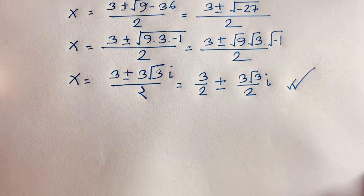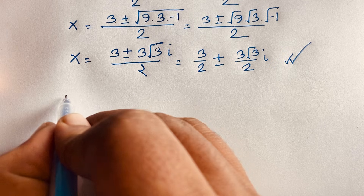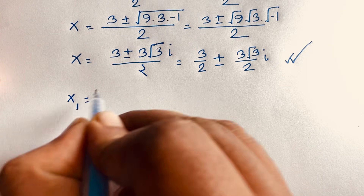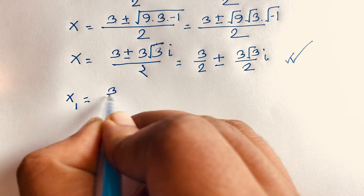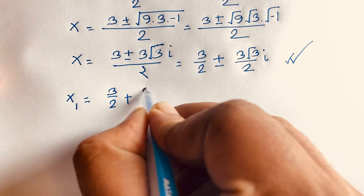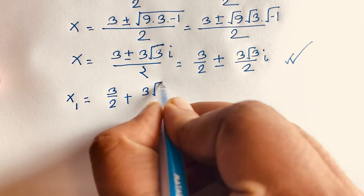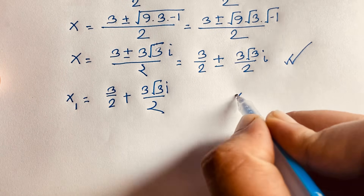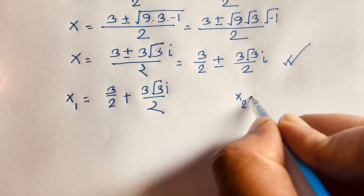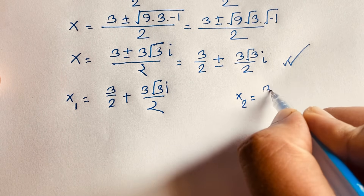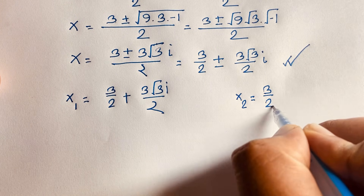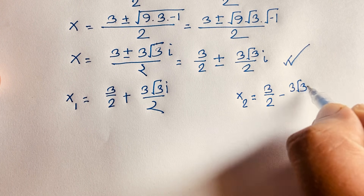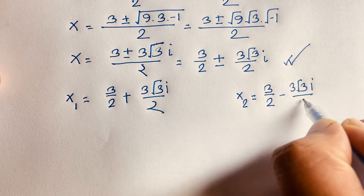Therefore, x₁ equals 3 over 2 plus 3√3·i over 2, and x₂ equals 3 over 2 minus 3√3·i over 2.